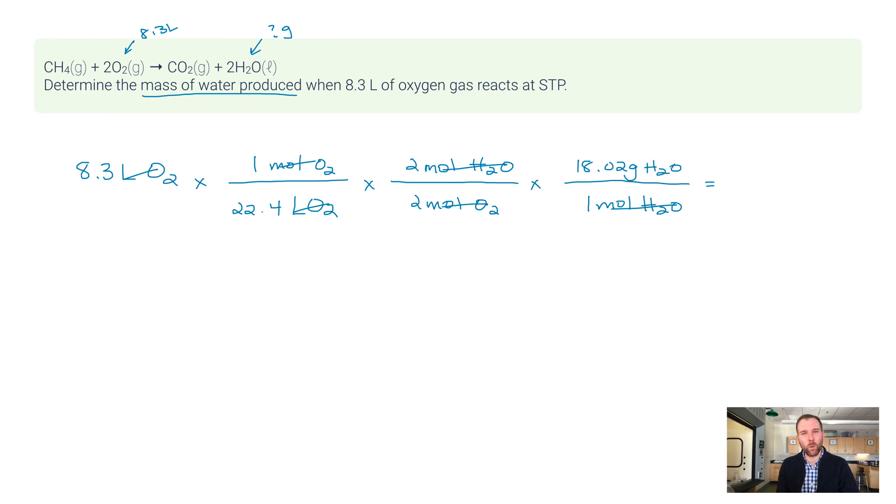I always recommend to my students: if you can find a way to calculate problems where you hit the fewest number of buttons, that decreases your chances of accidentally making a calculator mistake. I would just recommend you use your brain on that one and don't include the twos. This gives me, to two significant figures, 6.7 grams of water.